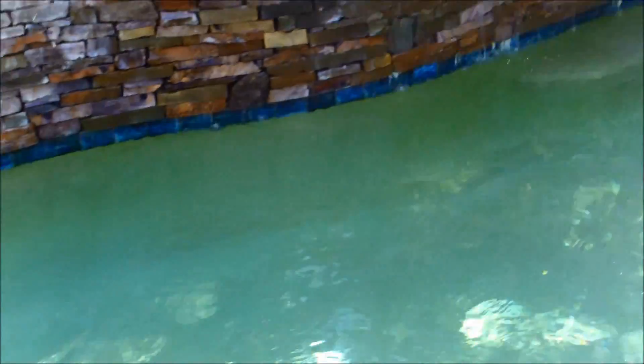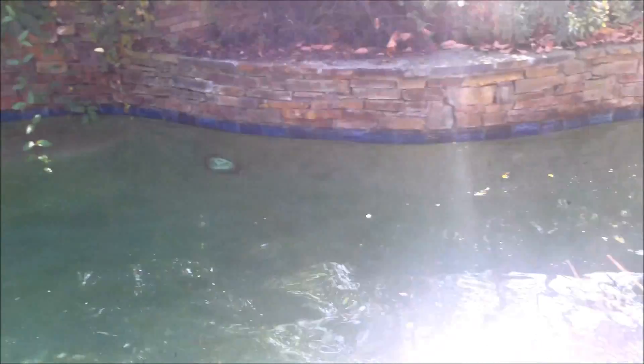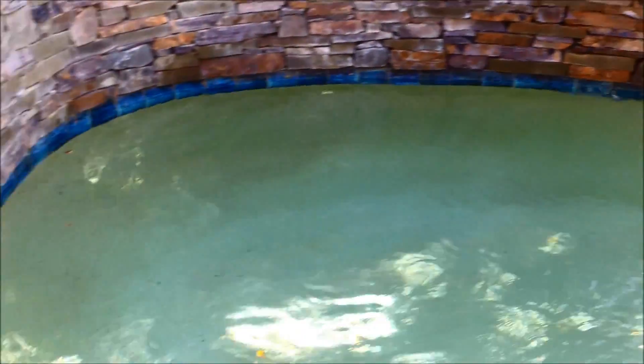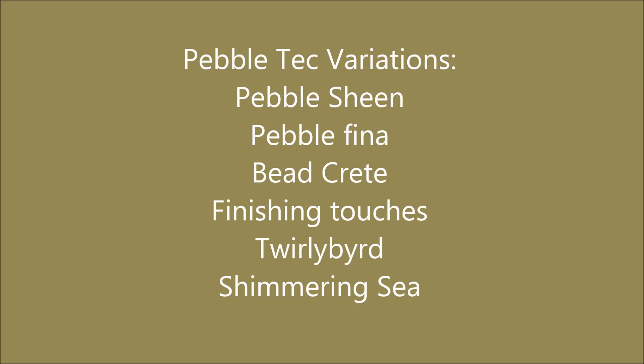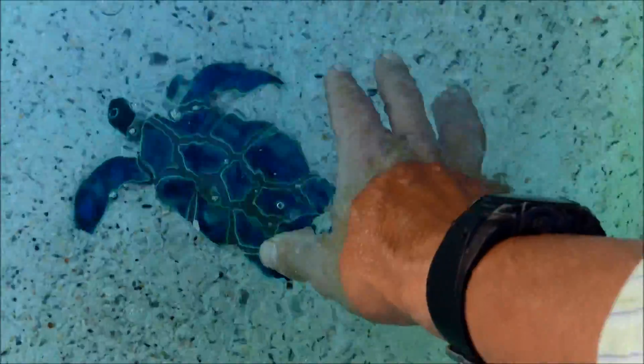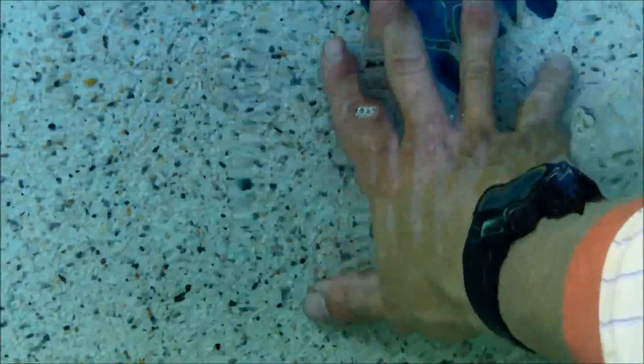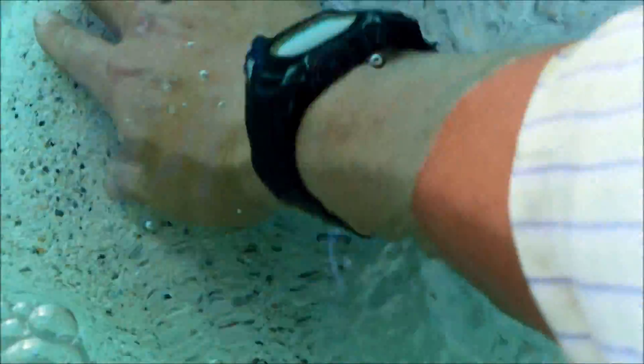This is a typical pebble tech pool. It comes in various colors, like with the colored plaster. Basically this is just river rock or pebbles. Here's a good look at a light colored pebble tech — this is a spa. It's a little bit rougher than plaster, but it's a lot more durable and longer lasting.